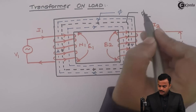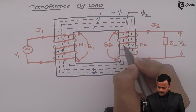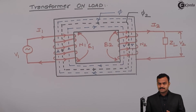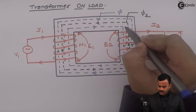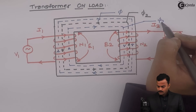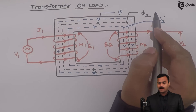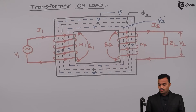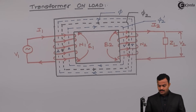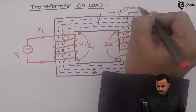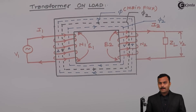If I consider N1 and N2 to be the same, the job of this flux is to nullify the effect of phi2. So what will happen now is that inside the core we can say three fluxes are there, but the resultant is only one flux, which we call the main flux. That's what happens when you load the transformer.